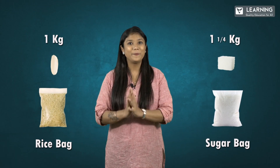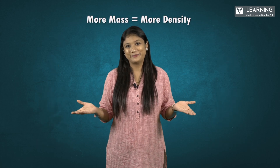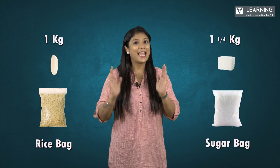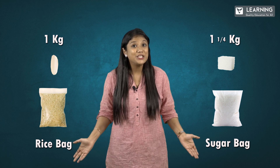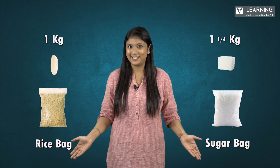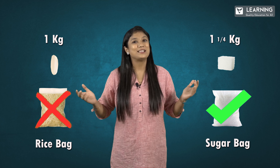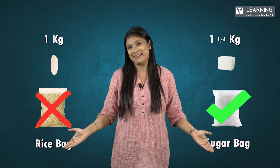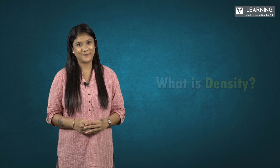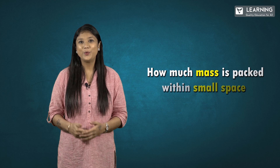Since they occupy the same space, the heavier bag has greater density. So which has greater density? Of course it's the sugar bag — because the sugar bag is heavier than the rice bag. Now answer me this: what is density? Density means how much mass is packed within a small space.